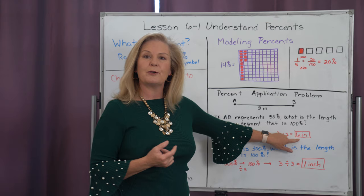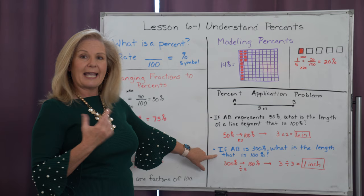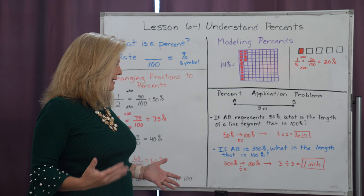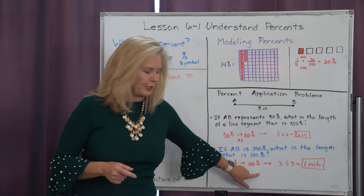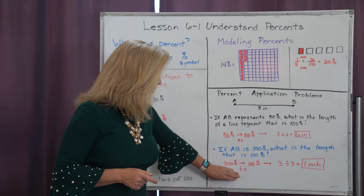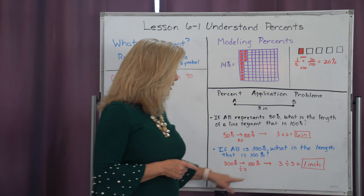Now we can go the reverse direction as well. So if we had the question, if AB is three hundred percent, what is the length that is a hundred percent? Well, that means we're going to shrink this down by thirds. If I'm going to go from three hundred percent down to one hundred percent, I have to divide by three. And if I do that here, then I'm going to take that measurement of three and divide it by three. Therefore, one hundred percent of the line segment would be one inch.